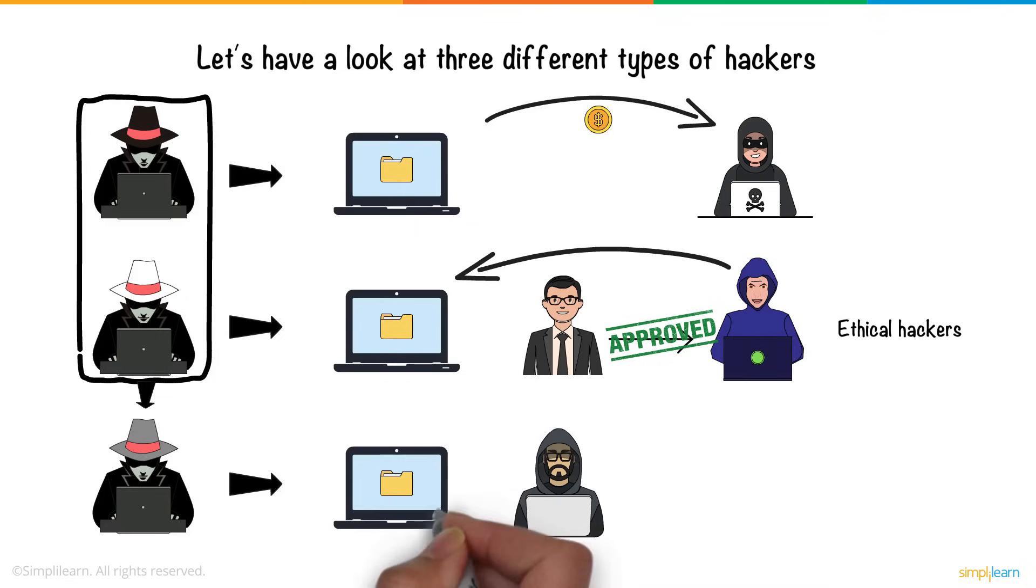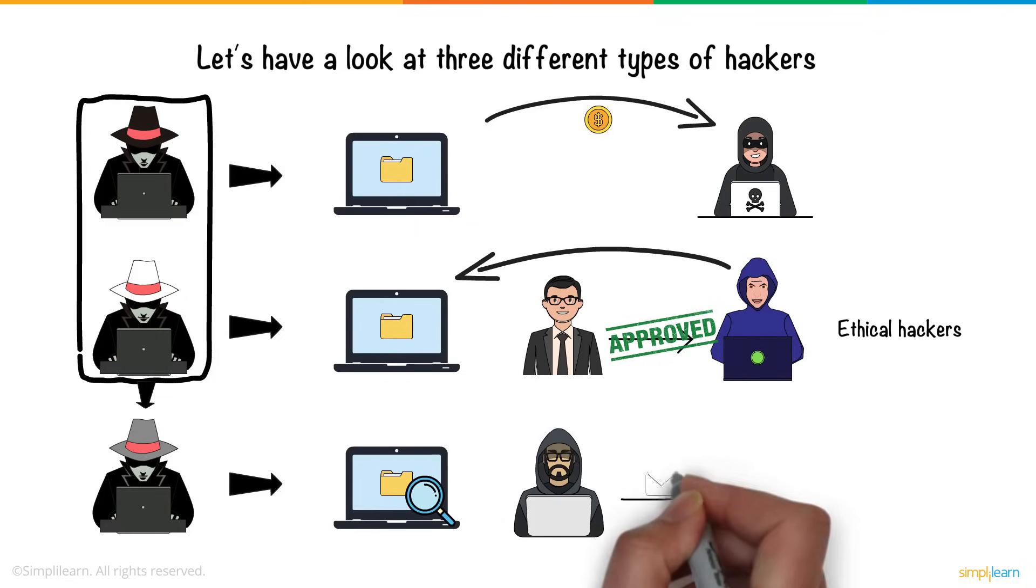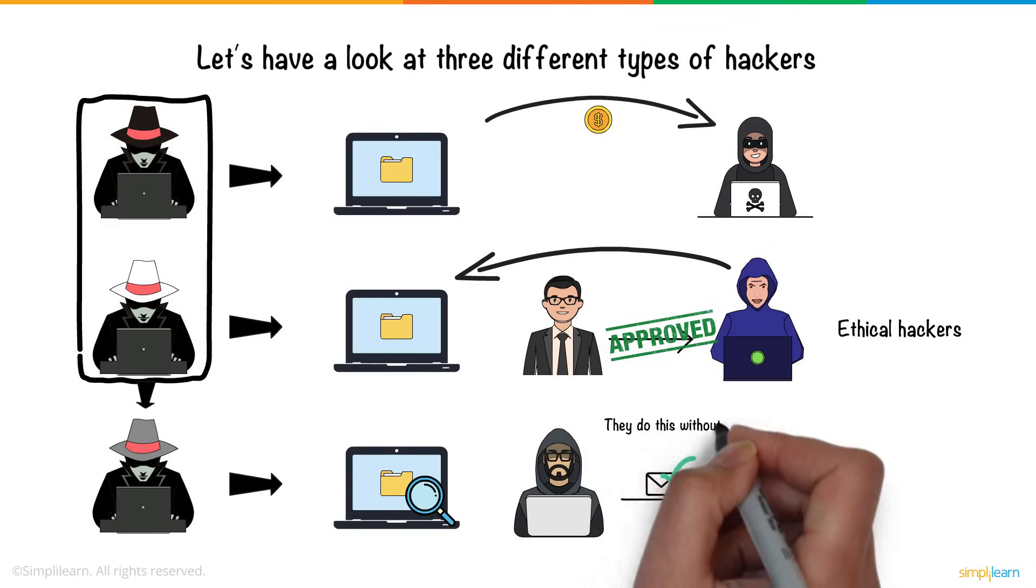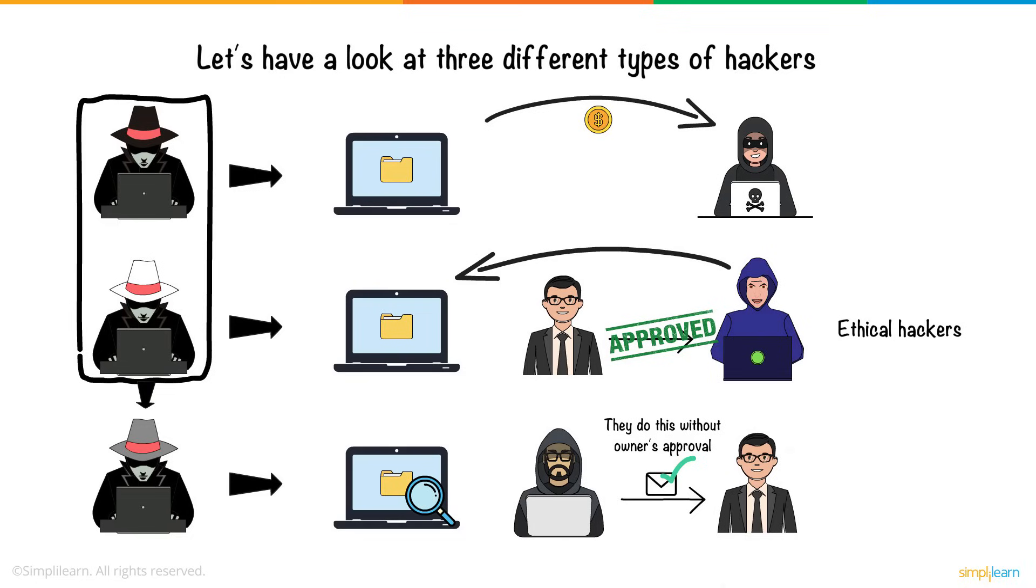These hackers discover vulnerabilities in a system and report it to the system's owner, which is a good act. But they do this without seeking the owner's approval. Sometimes gray hat hackers also ask for money in return for the spotted vulnerabilities.